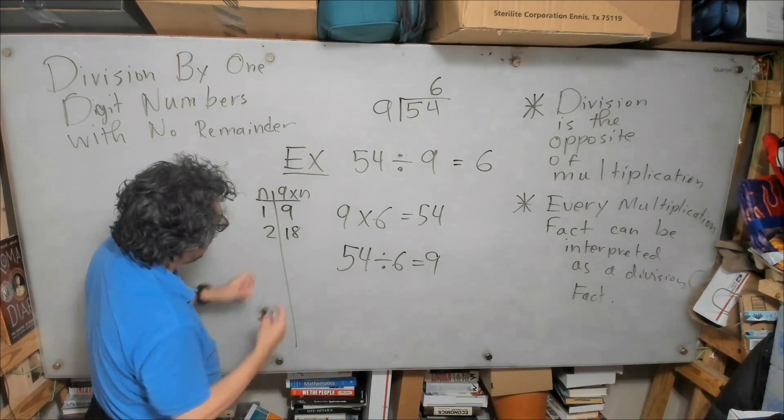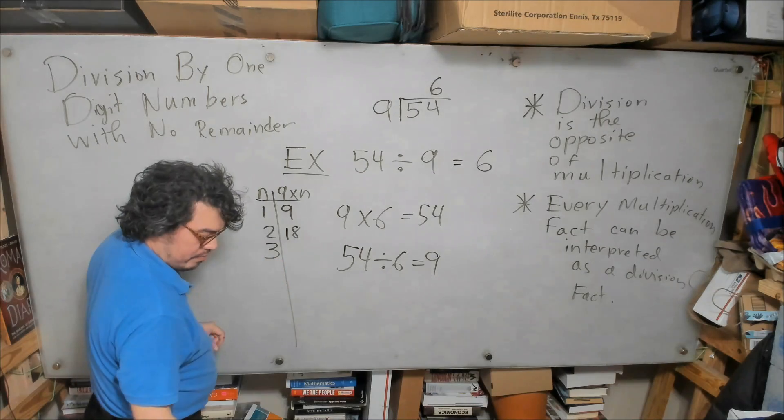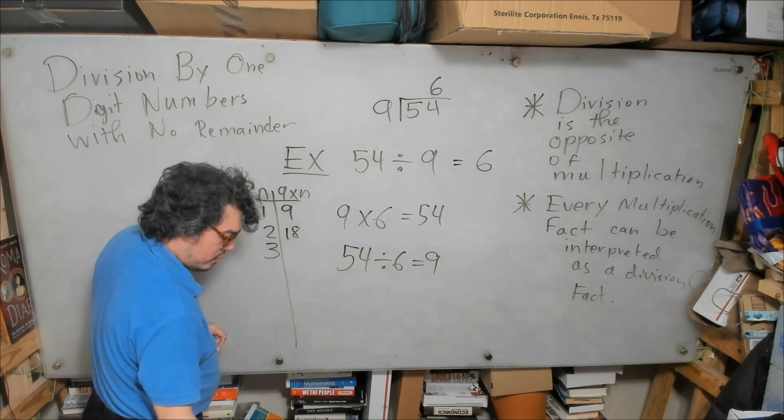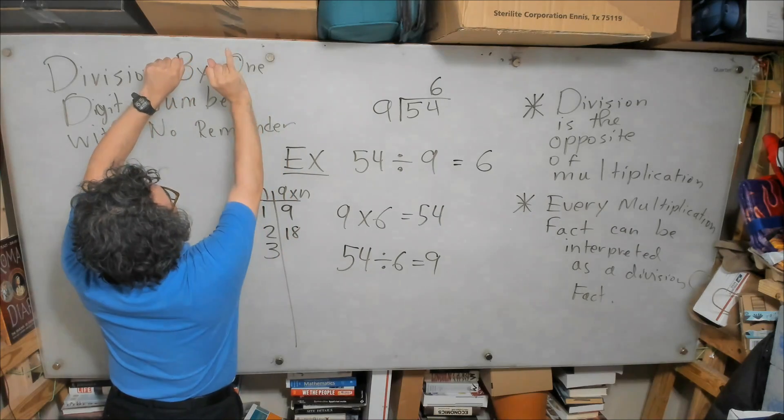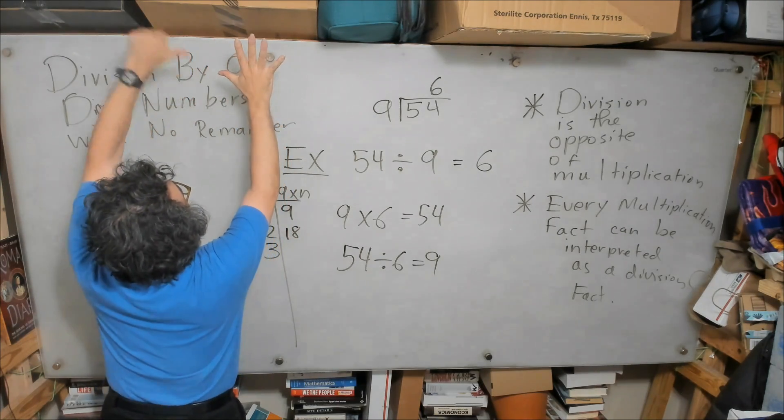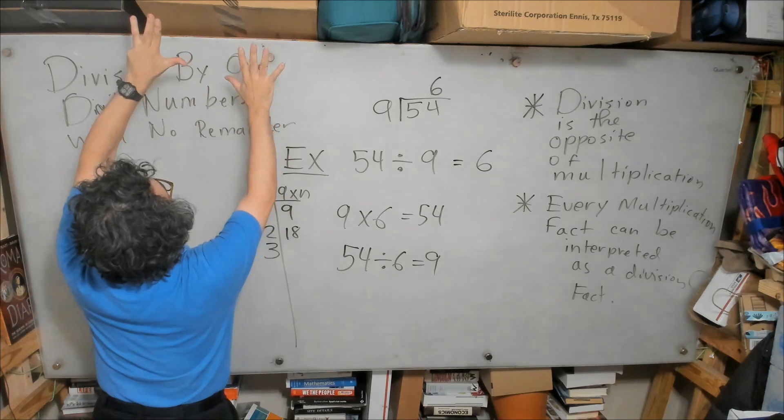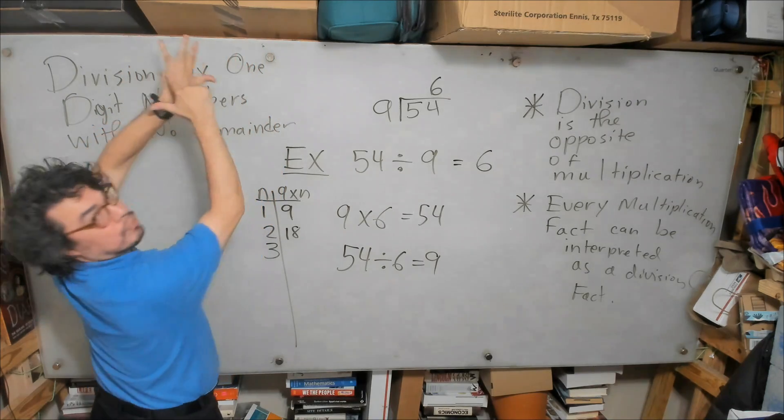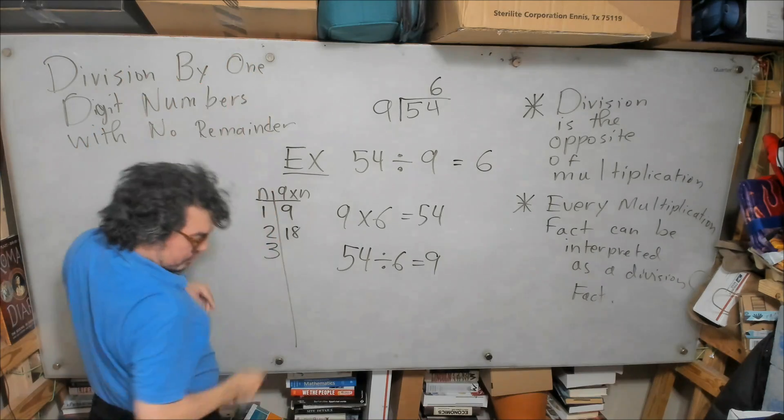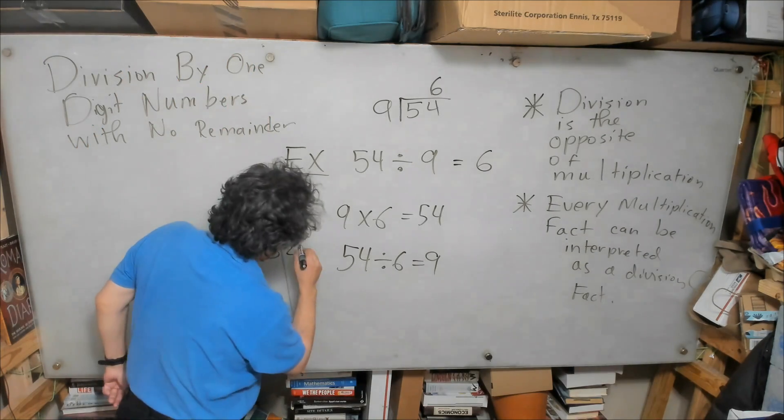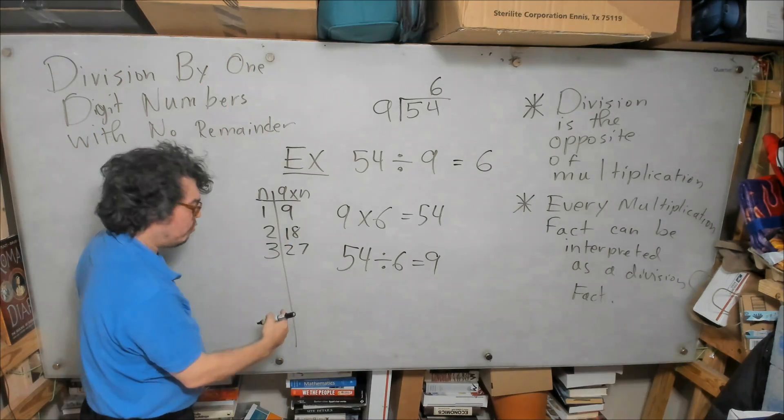Then, to get 9 times 3, I would add 9 again. So, 18, 19, 20, 21, 22, 23, 24, 25, 26, 27. See, I didn't bring the last digit up because I'm not adding 10, and I got to 27. And then you could continue this process.